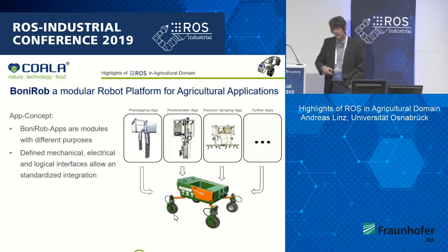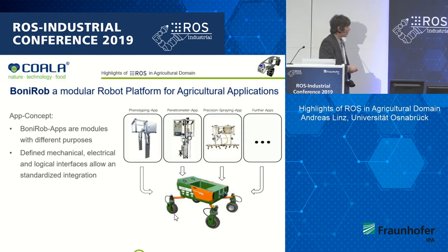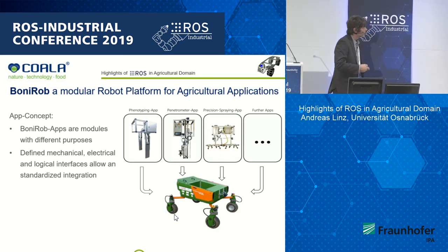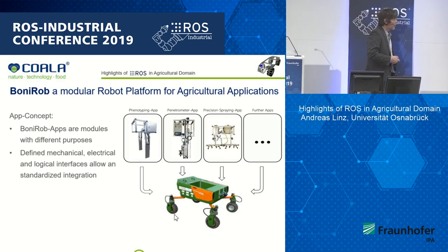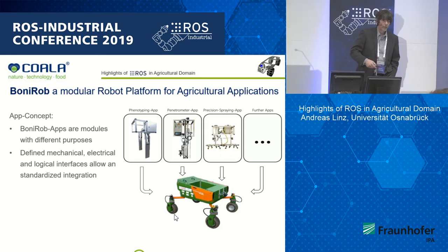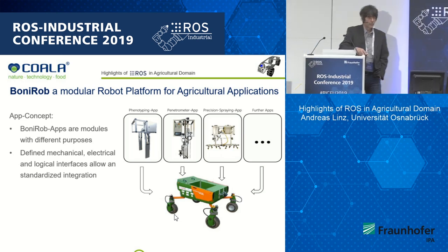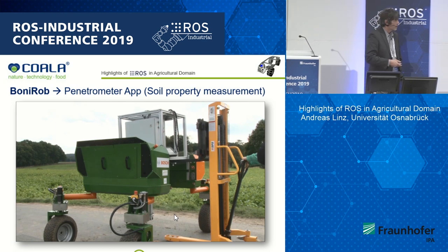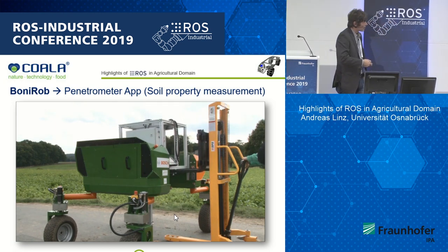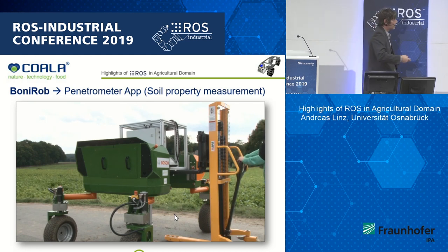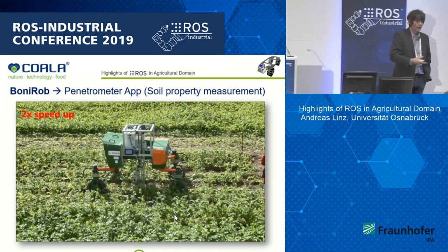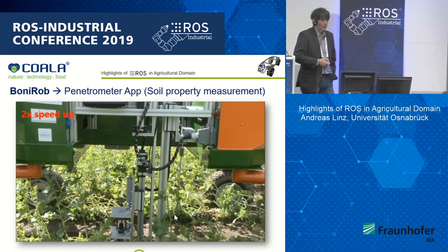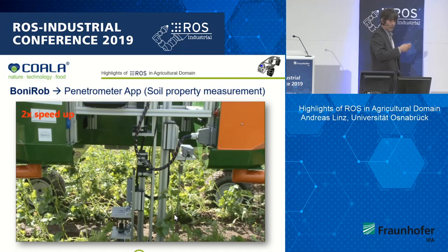Here you can see some app examples — we have a lot of them. There's a phenotyping app, a penetrometer app for soil properties, and a spraying app that can spray precisely at positions where weed is found between rows. In a video, you can see how we change the app: you put it in the mounting, connect it to the robot, then give the robot a plan of what it has to do.